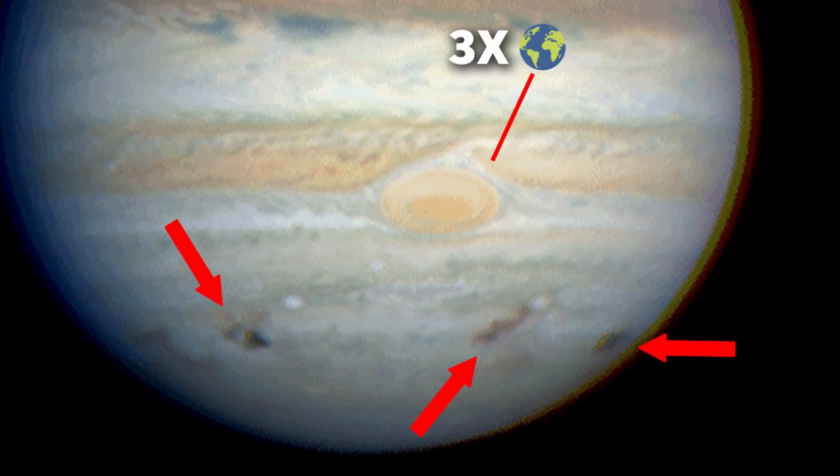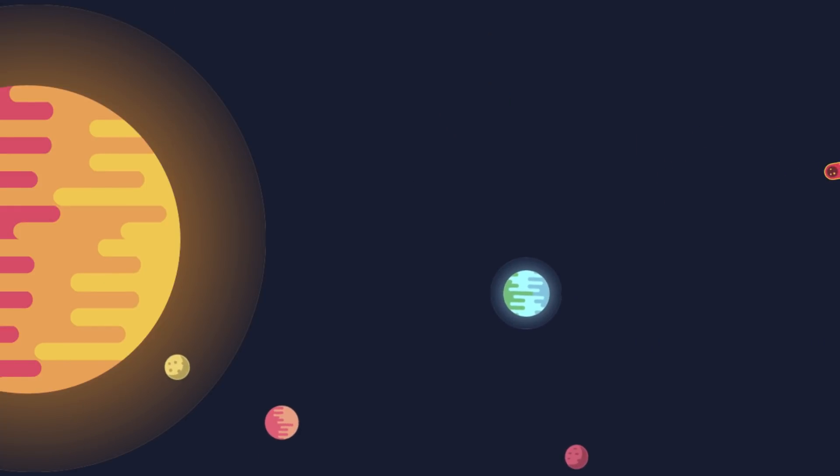Now imagine if Jupiter hadn't been around in 1994. Where would have that comet gone? The next largest and nearest planet was Earth. That comet would have collided with us.